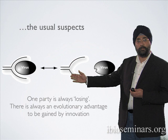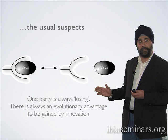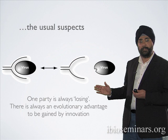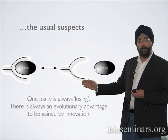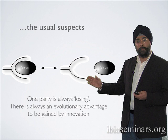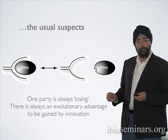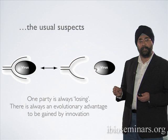The important take-home message is that one party is always losing this high-stakes evolutionary battle. On the left-hand side, the host is winning because it recognizes a viral protein. On the right-hand side, the host is losing because the virus has acquired the right mutation to evade the immune system. This means there will never be a perfect equilibrium — over the course of evolution and even a single infection, the immune system and virus will be locked in this arms race of very rapid evolution, and there's always an evolutionary advantage to be gained by innovation.